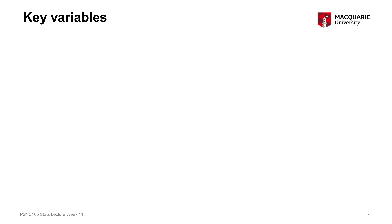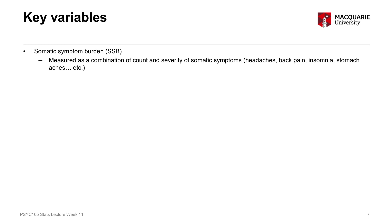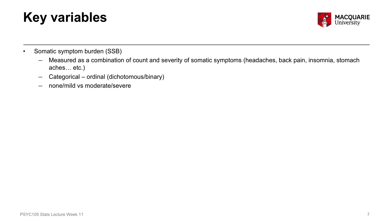The key variables in this experiment include somatic symptom burden, which is measured as a combination of a count of how many symptoms a person experiences and how severe those symptoms are, covering about 14 different symptoms such as headaches, backaches, insomnia, stomach aches, and neck or abdominal pain. It's a categorical variable — specifically an ordinal and dichotomous binary variable — with two groups: no or mild somatic symptoms versus moderate or severe somatic symptoms.